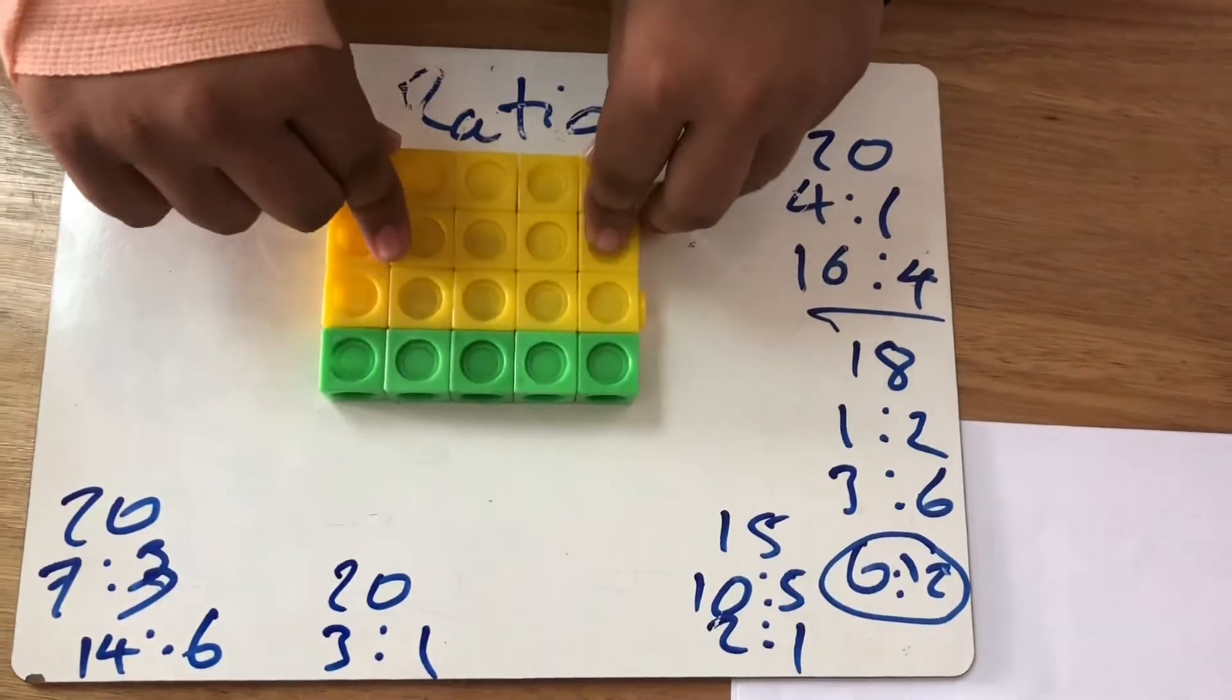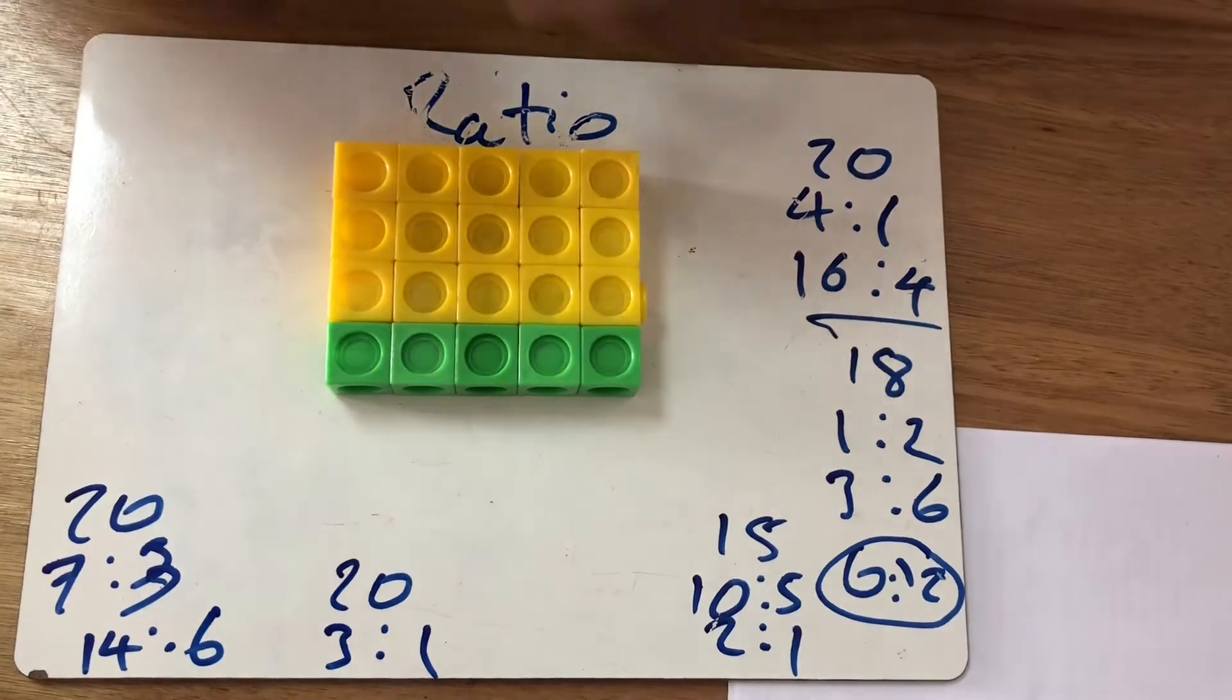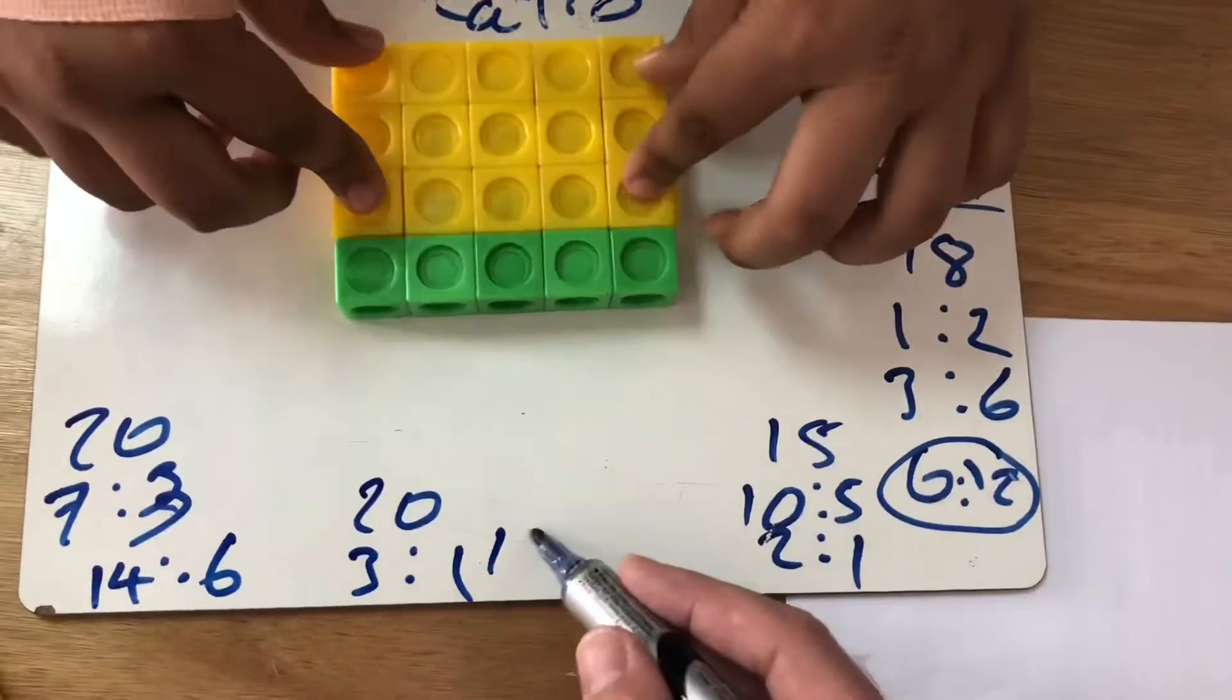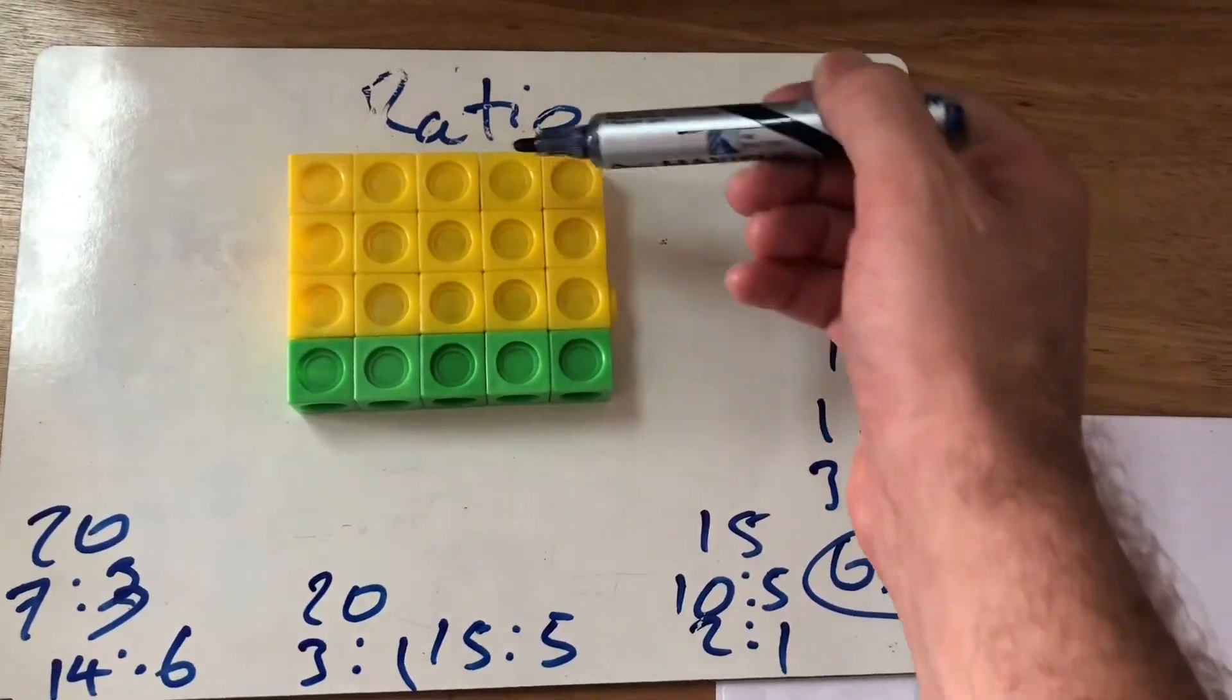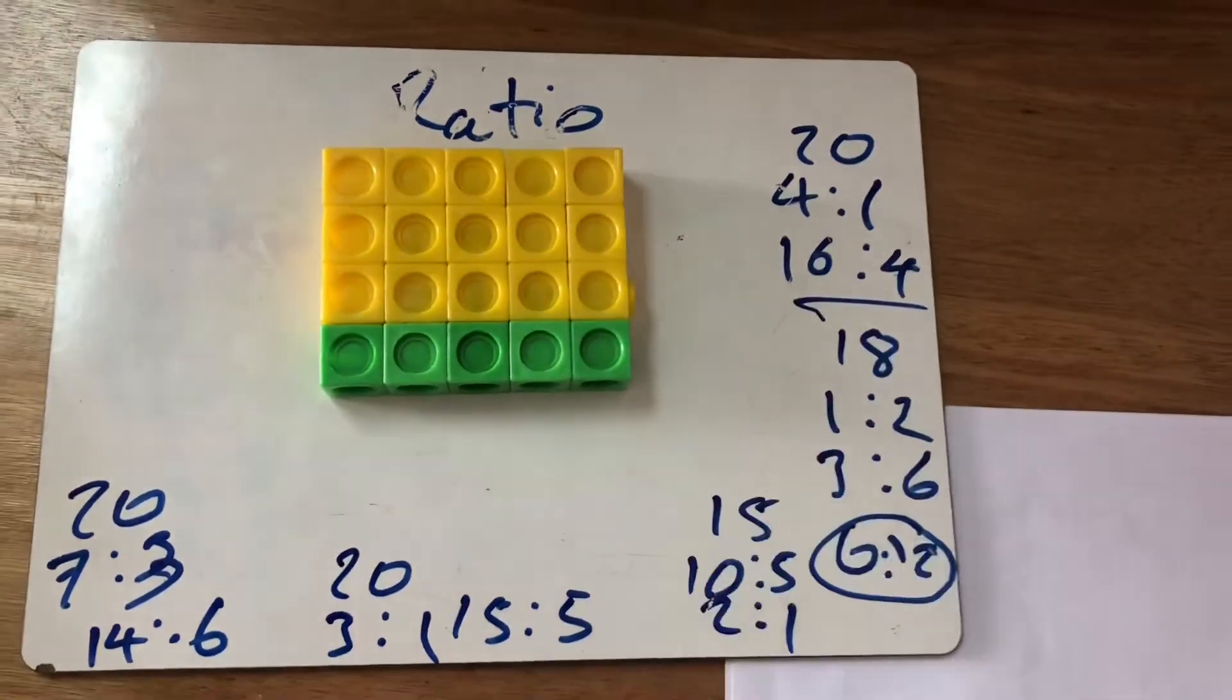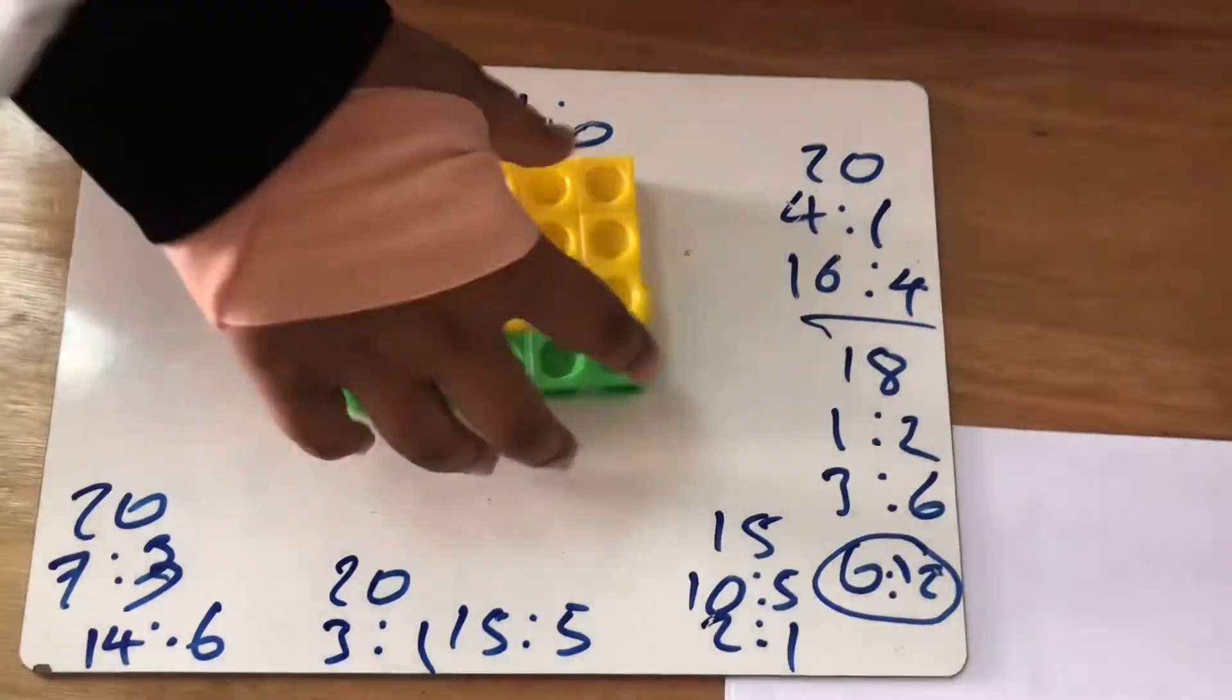And from that you can also get 15 to 5. For every 15 yellows there's going to be five greens. And you can see in each of those columns 3, 1, 3, 1, 3, 1, just like the given ratio. Brilliant. Thanks very much.